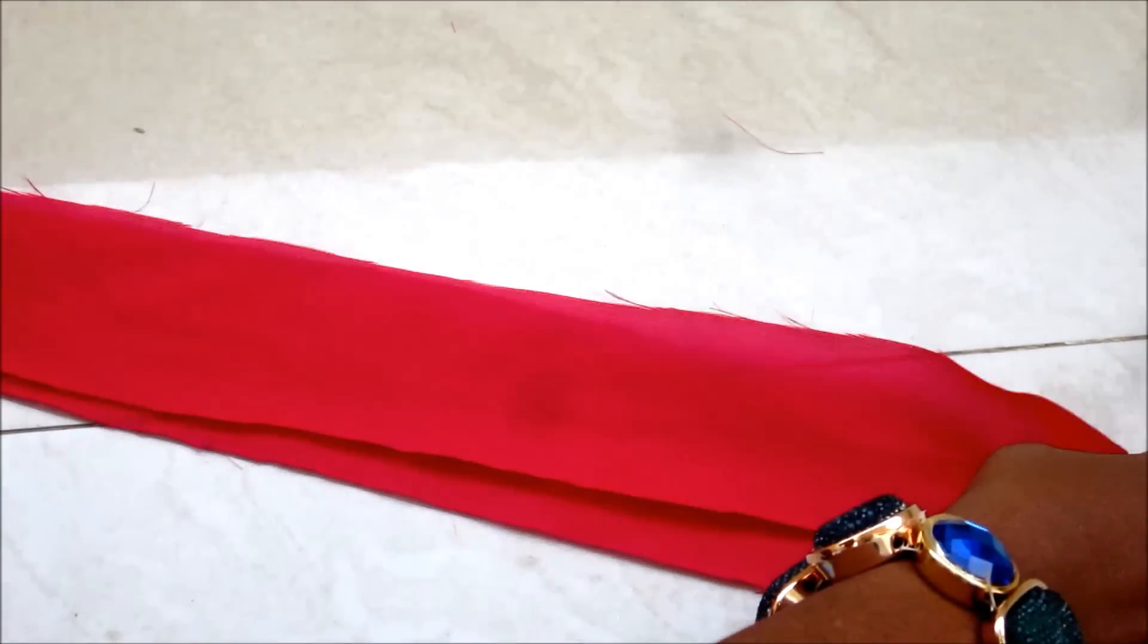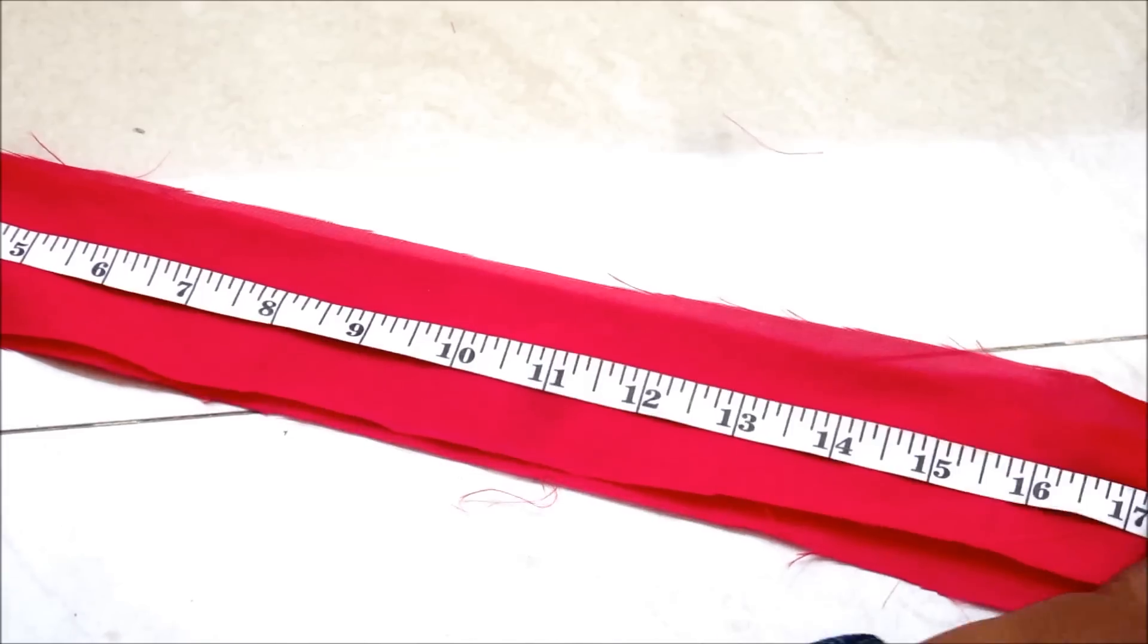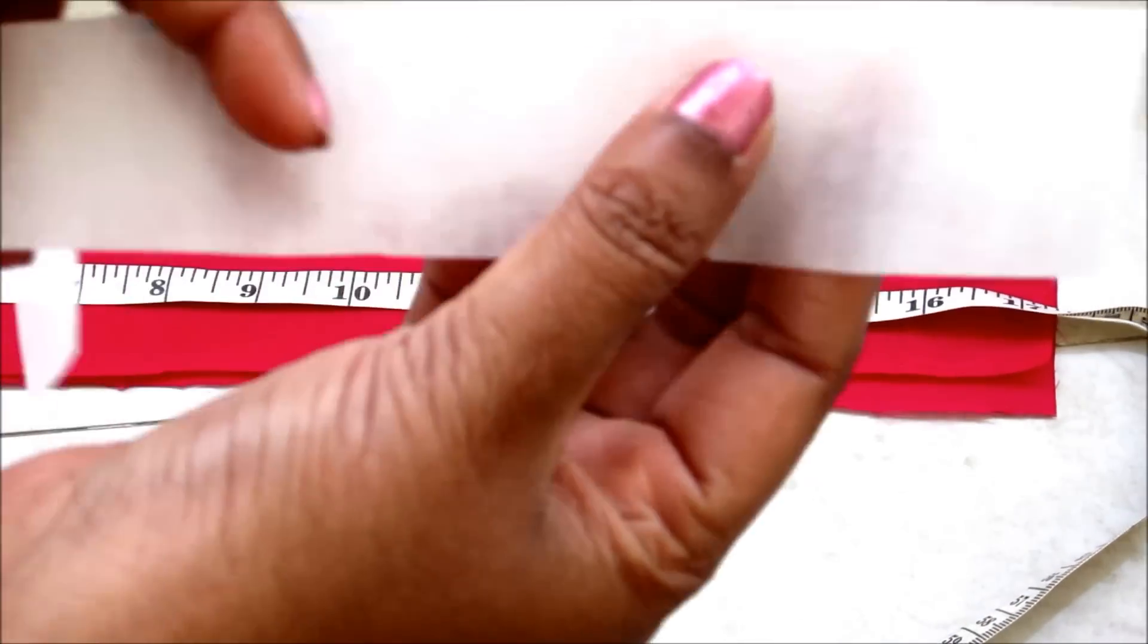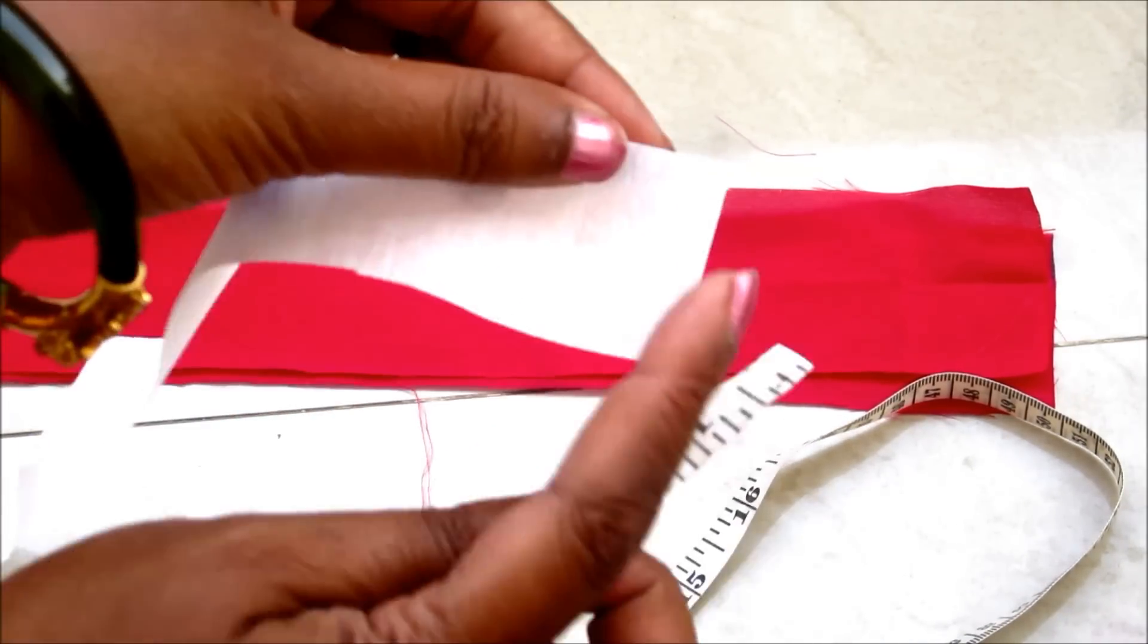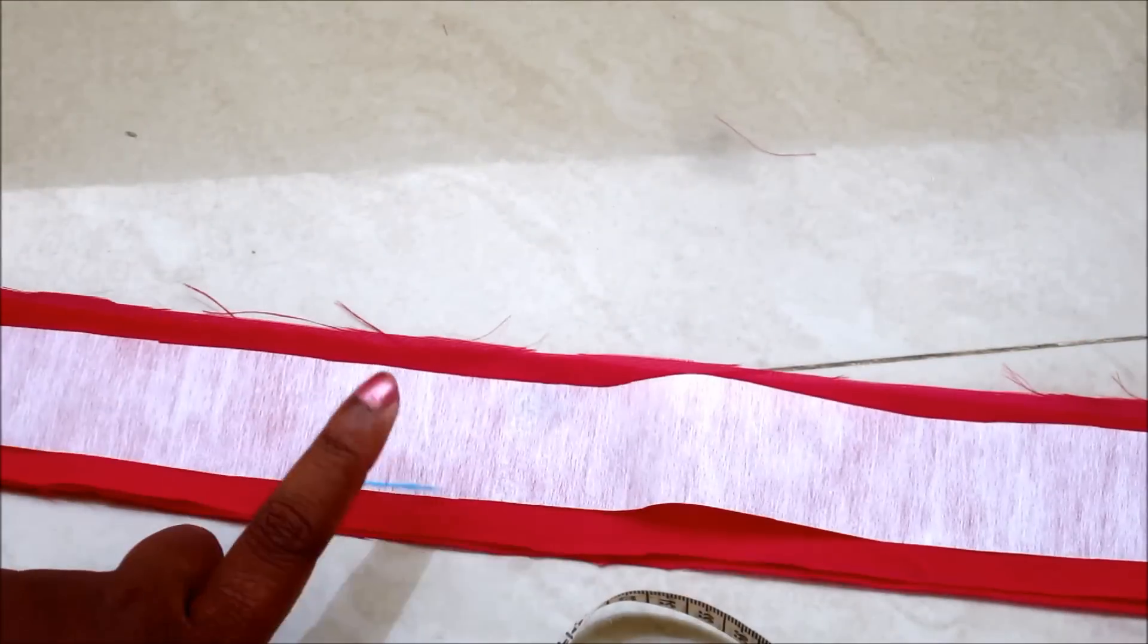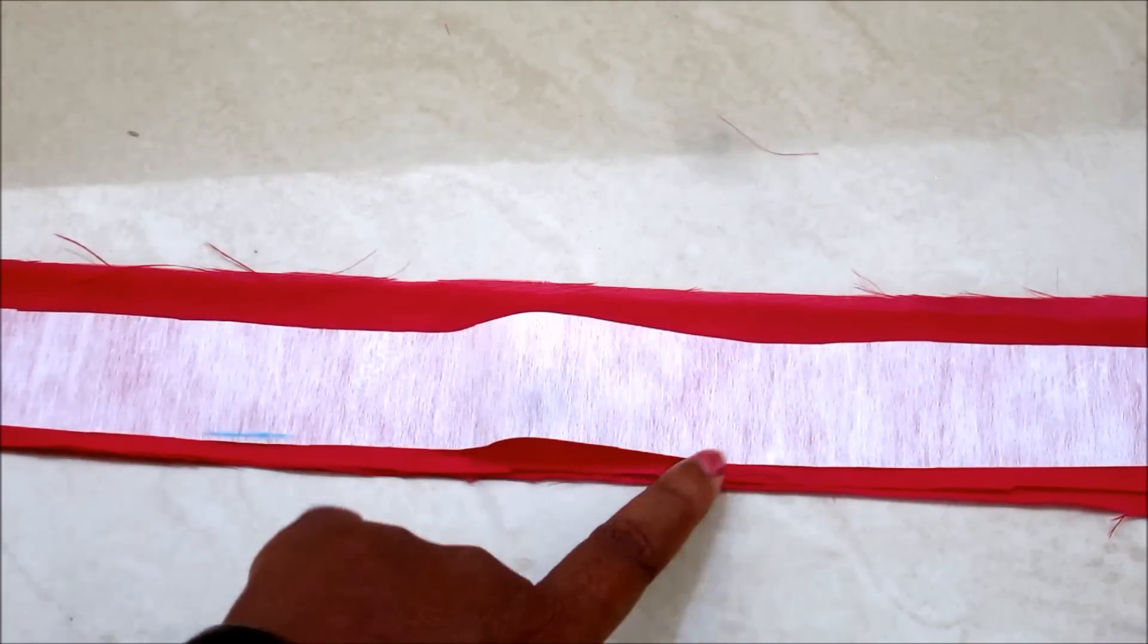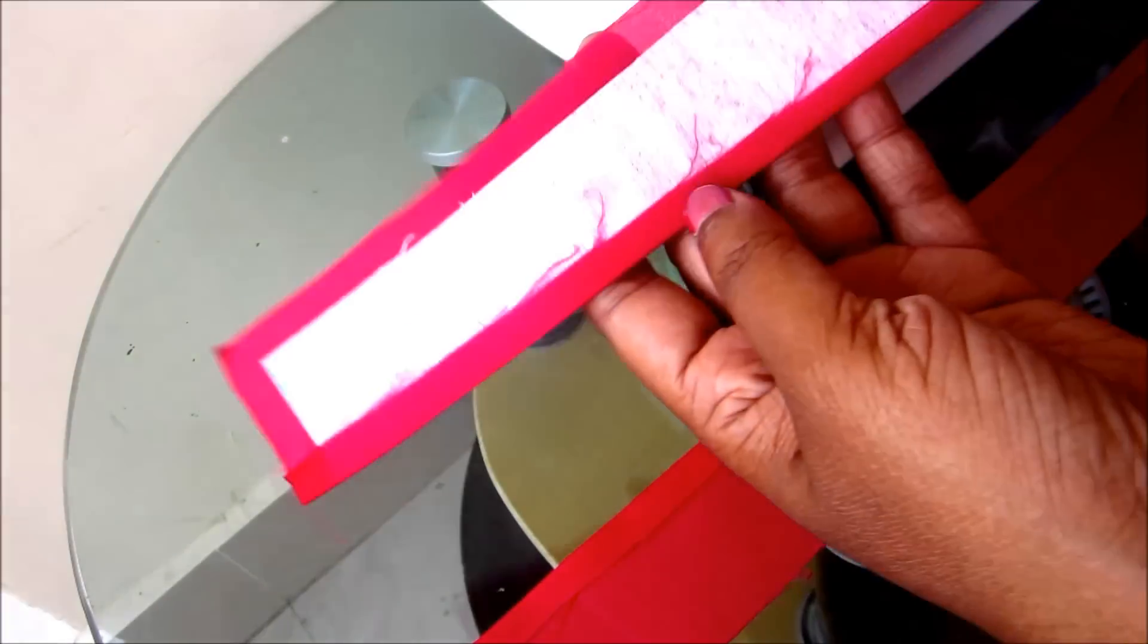Now I'm ready with the strips and also you'd require interfacing of 1.5 inches by 16.5 inches. I'm decreasing half an inch in the length and width twice on the interfacing. Now lay the interfacing on one strip and get it pressed well towards the wrong side of this strip. See, I'm done with the pressing.